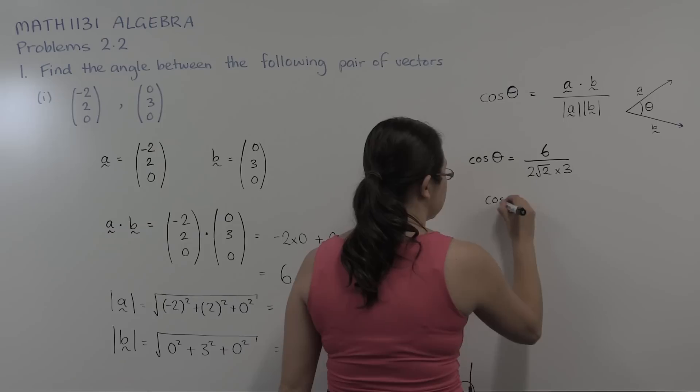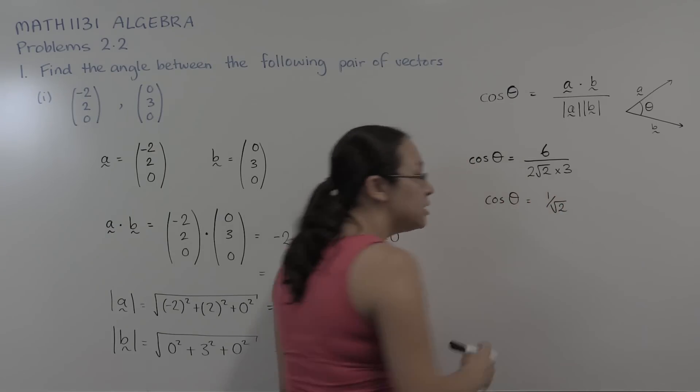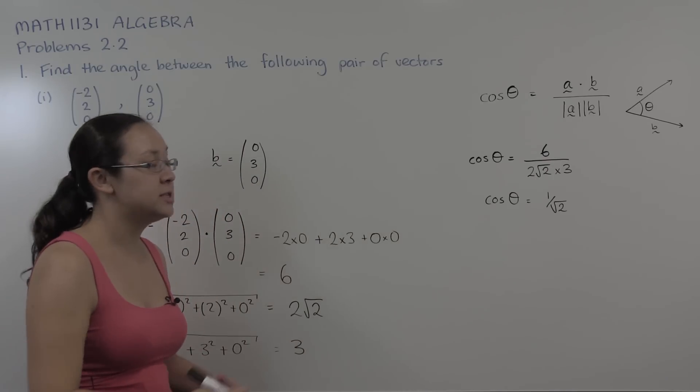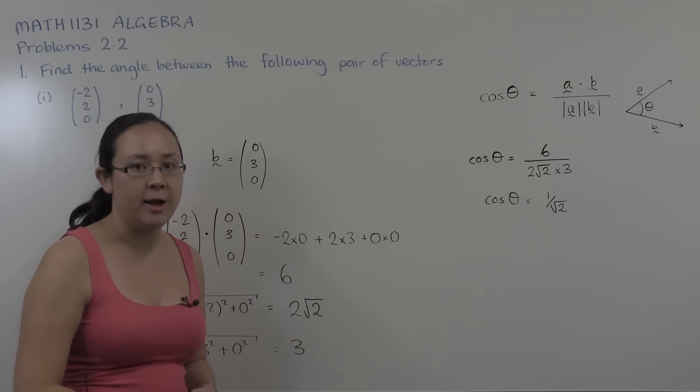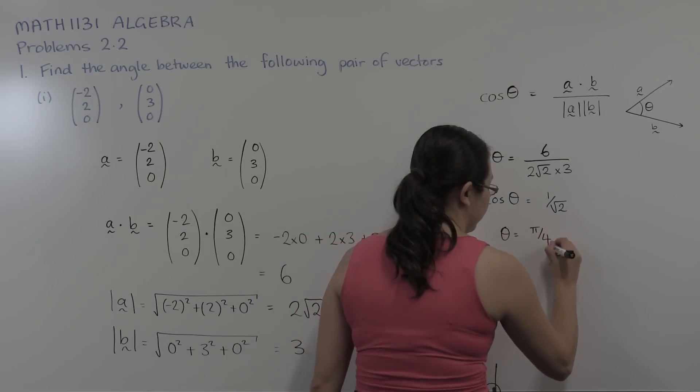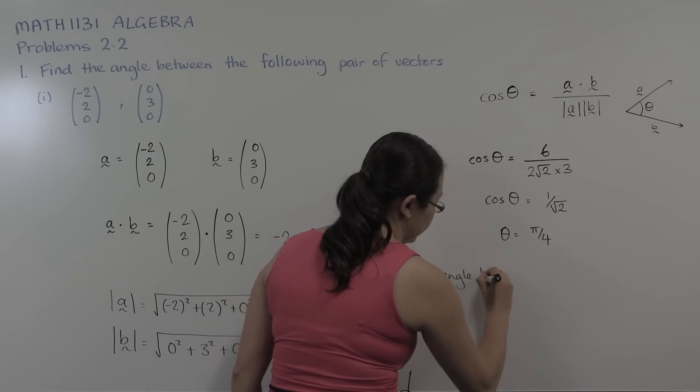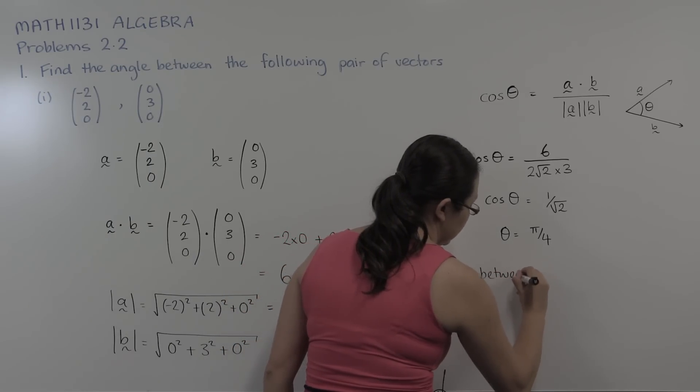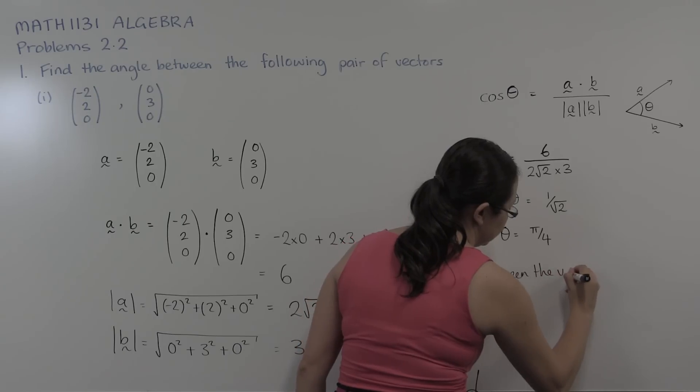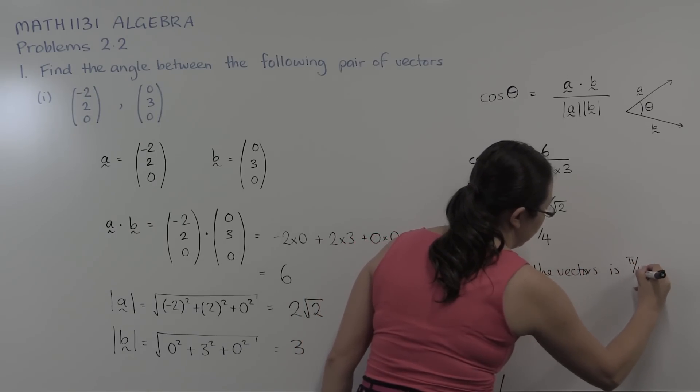So here we get cos theta is equal to one on root two. Now there's lots of angles that will give one on root two. We want to take the one between zero and pi. So here we're going to get theta equals pi on four. Therefore, the angle between the vectors is pi on four.